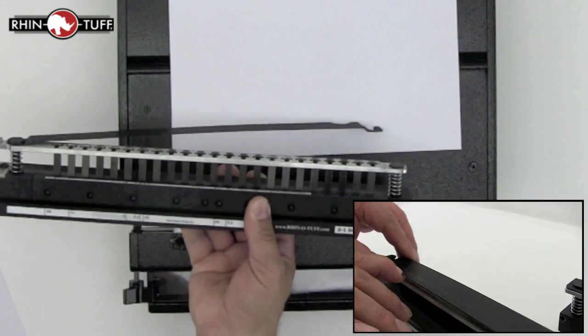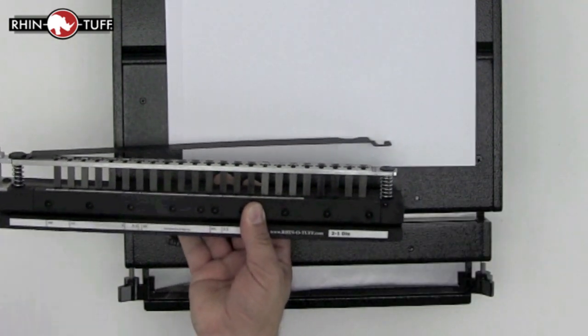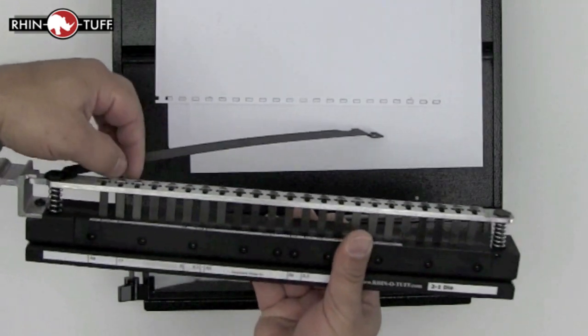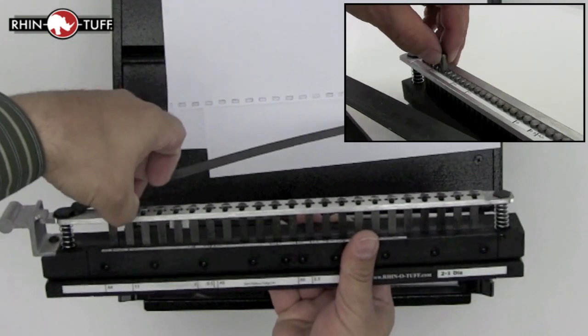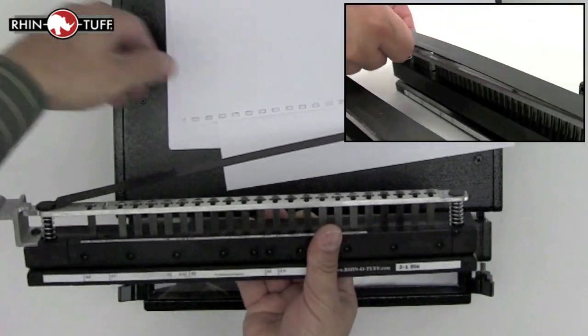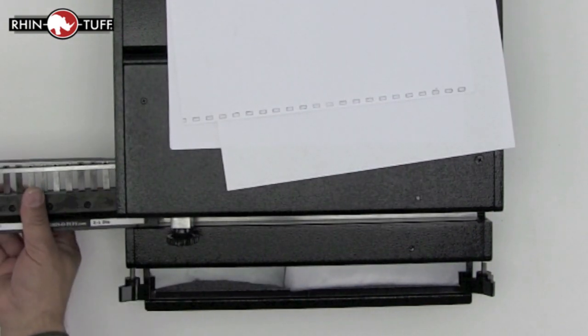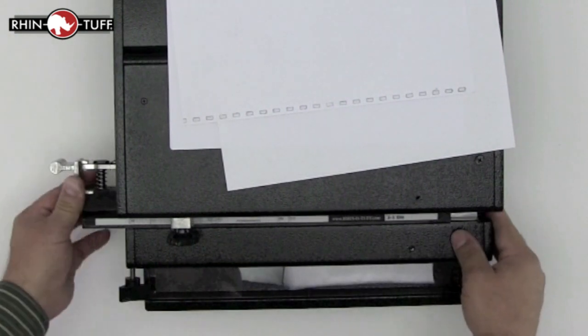Since all RhinoTuff die pins are disengageable, you can do so by depressing the pin carriage, removing the pin capture and now line up your paper along the die to see which one to remove. Simply pull it up and out, any and all. Replace the pin capture and load the die back into your Onyx OD4012 and lock it down.